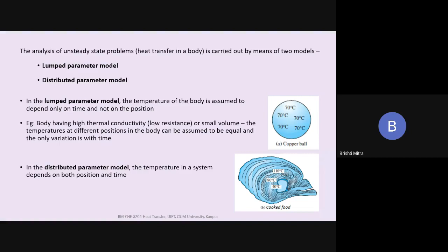When you want to study unsteady state processes, there are two kinds of models involved: one is called the lumped parameter model, and one is called the distributed parameter model. Let us try to understand a little bit about these two models.